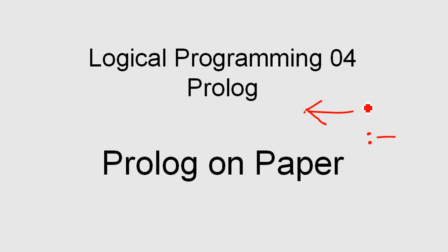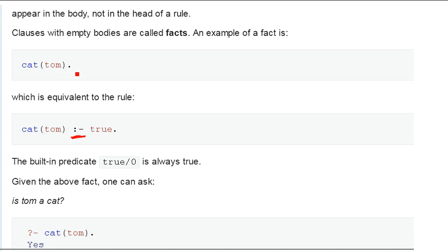Here you can see a simple example. And also facts like this one are written simply like that with a dot. This one you can see over here. So Tom is a cat. That's a fact.